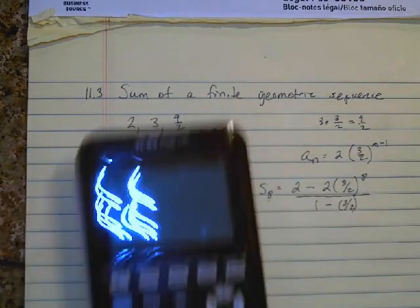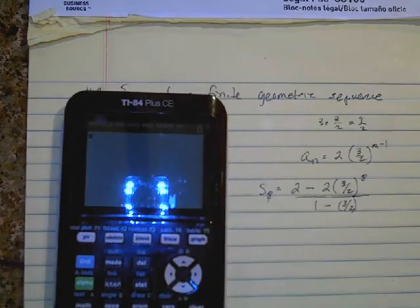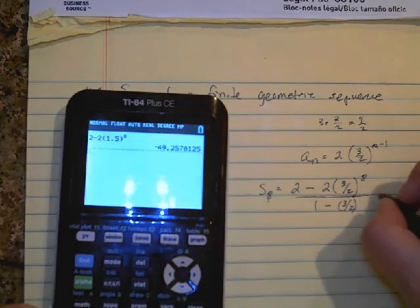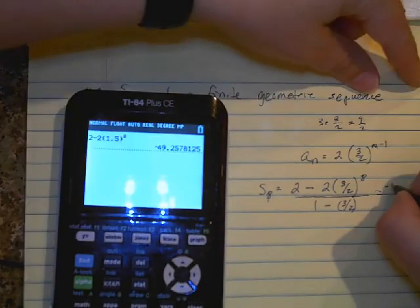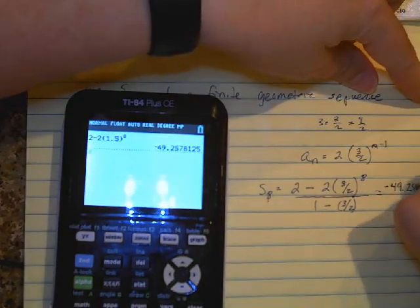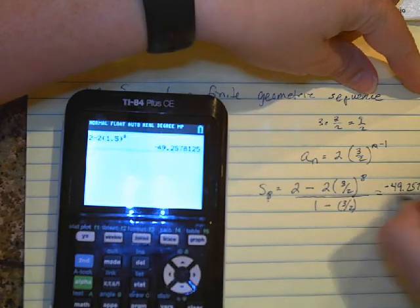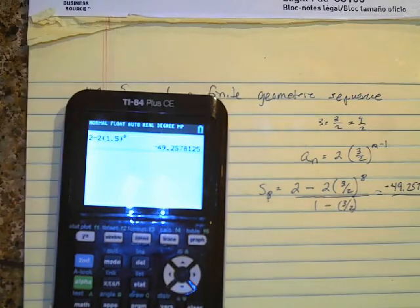Then I'm going to use my calculator. So for the numerator I've got two subtract two parenthesis, and I'm going to put 1.5 instead of three halves because it's easier to enter, to the eighth power. So the numerator is approximately negative 49.25781125 divided by one minus one and a half.